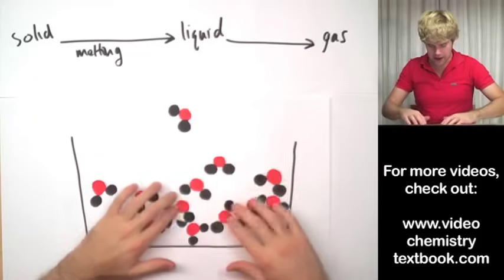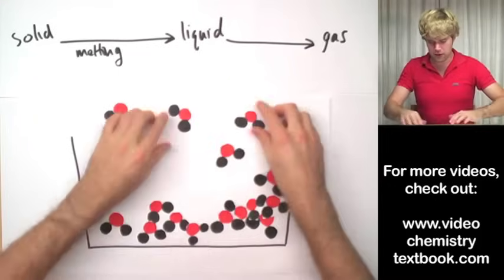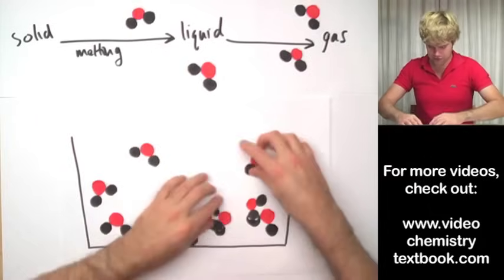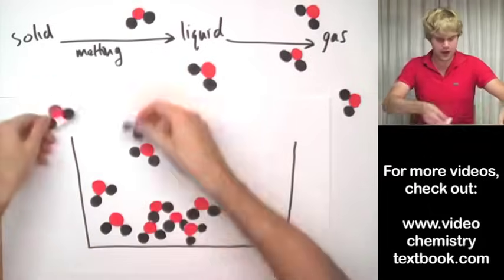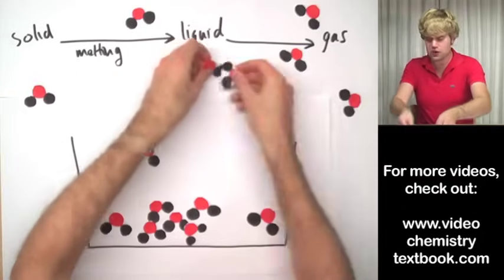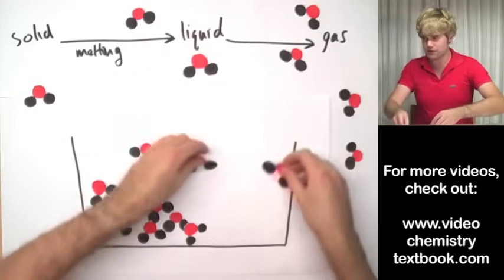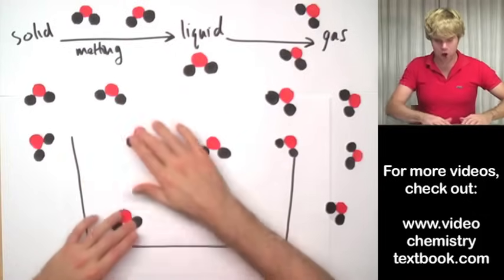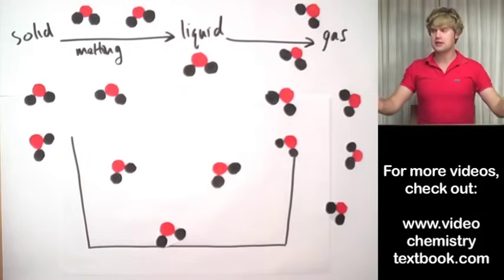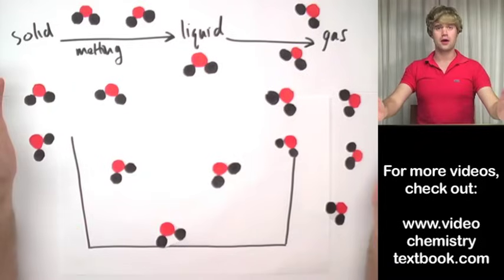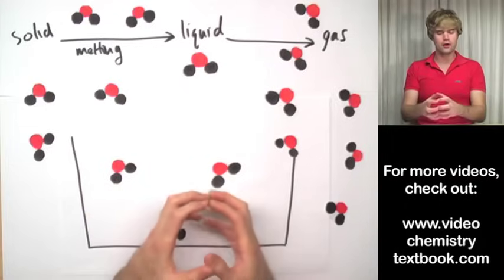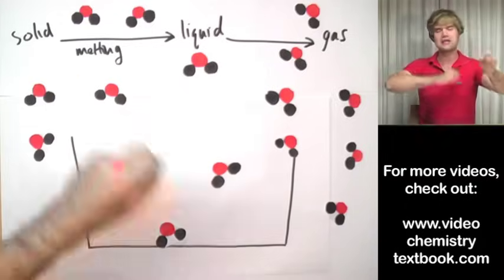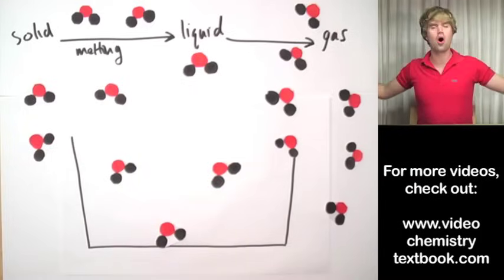So I want you to imagine this liquid getting hotter and hotter, kicking all these molecules out into the air. And as they get kicked out into the air, they fly off and start flying around all over the place, bumping into each other, bumping into the sides of whatever they're in. And now, this is all gas. And as you can see, gas is totally disorganized. Solid was very organized, liquid was not so organized but pretty closely packed. Gas—they're all moving around real fast and they're all over the place.